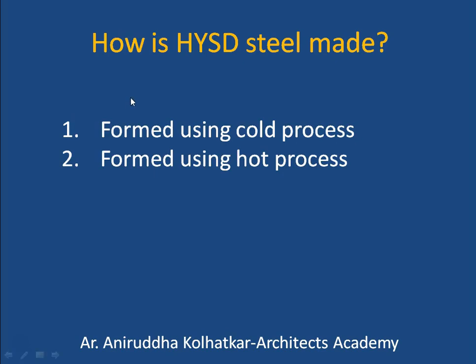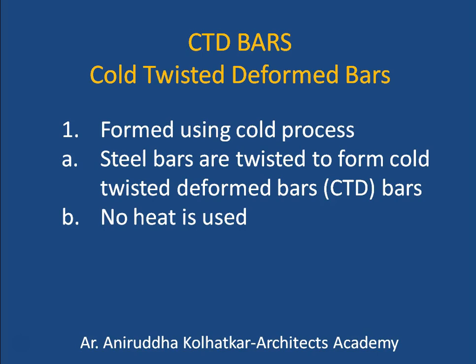How are high yield strength deformed bars made? They are made by two processes: the cold process and the hot process. In the cold process, bars are manufactured and given deformation or the necessary strength at room temperature. The first type is the cold twisted deformed bar, or CTD bar. The steel bars are twisted to form CTD bars, with no heat used, so this is done at room temperature.